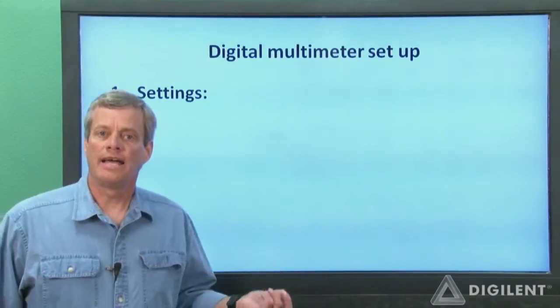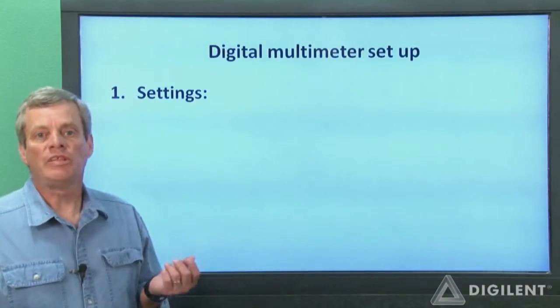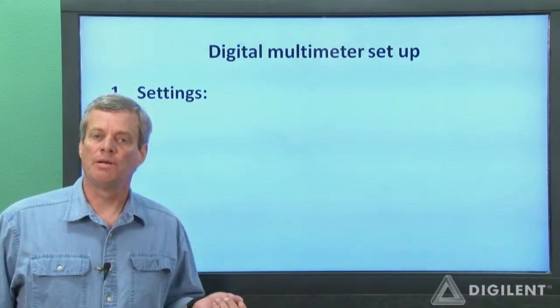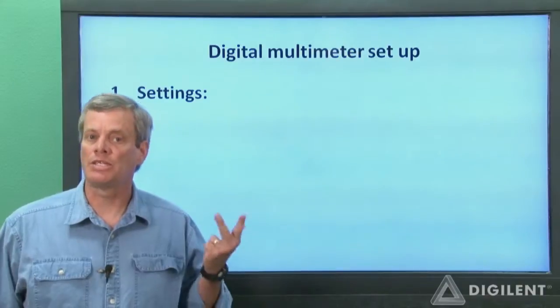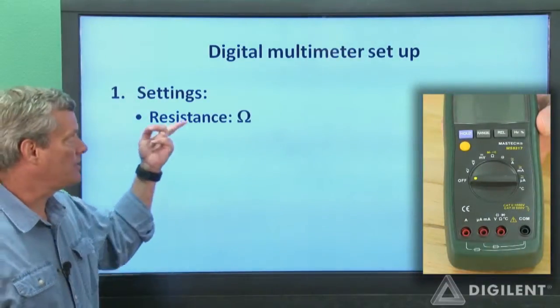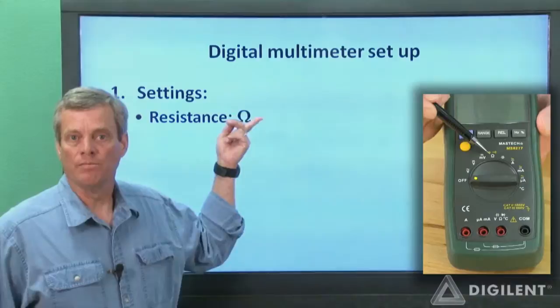First, I want to talk about the dial settings on the DMM. Probably the most common things we'll use DMMs for, at least for now, is to measure resistance, constant voltages, and constant currents. To measure resistance, move the dial to the ohm symbol.